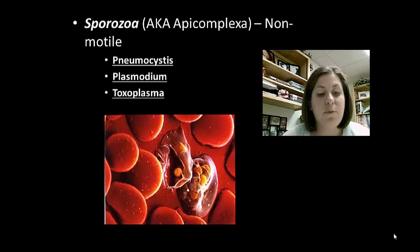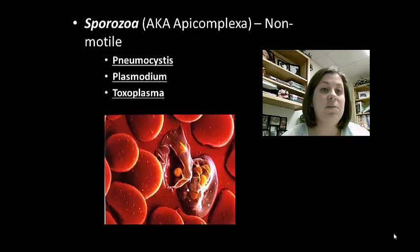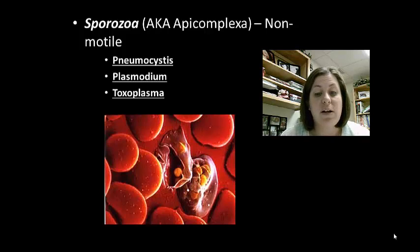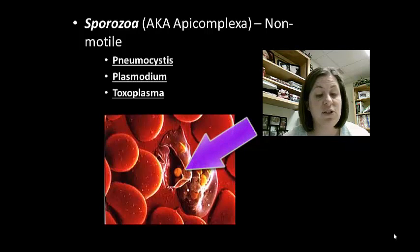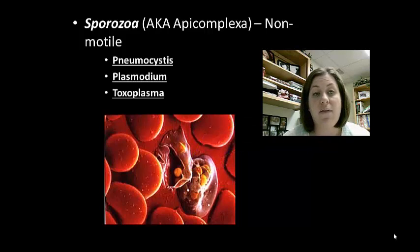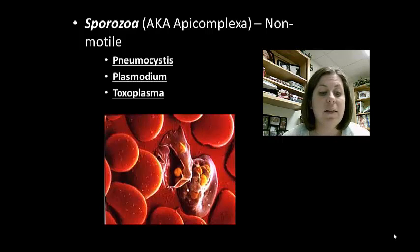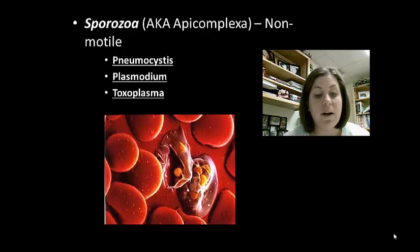The last protozoa group is the non-motile group, which means they don't move on their own. This is called the sporozoa, also known as the Apicomplexa. These are parasitic and demonstrate a very complex life cycle involving producing infectious spores. Pneumocystis is a type of pneumonia seen in AIDS patients caused by this group. Plasmodium are protists carried by mosquitoes that cause malaria — this picture shows what malaria does to your red blood cells. Last is Toxoplasma, which is carried by cats.